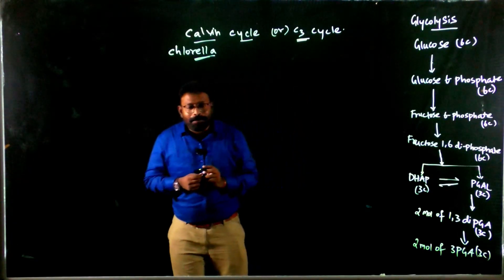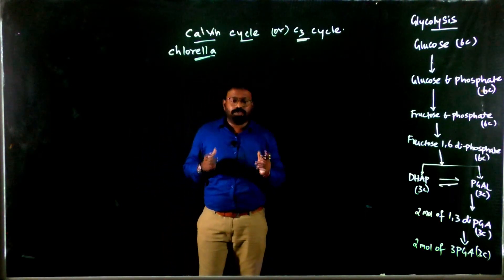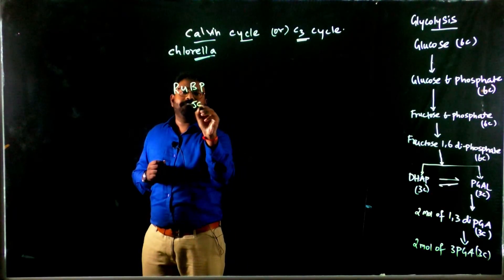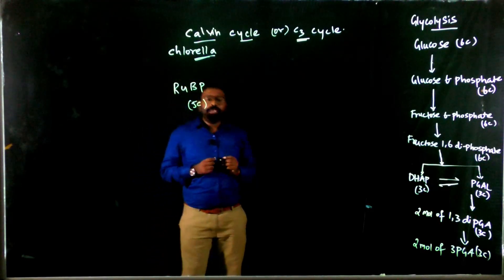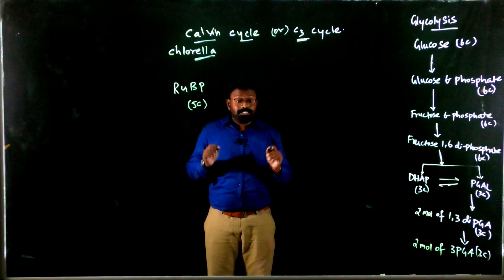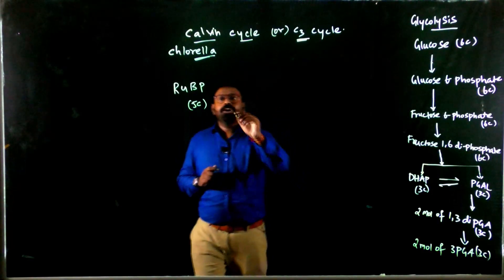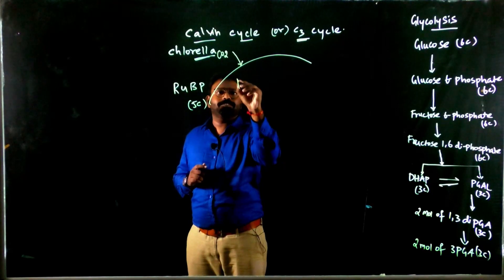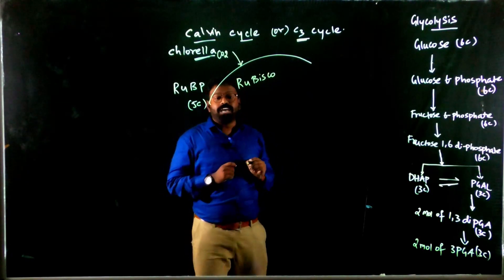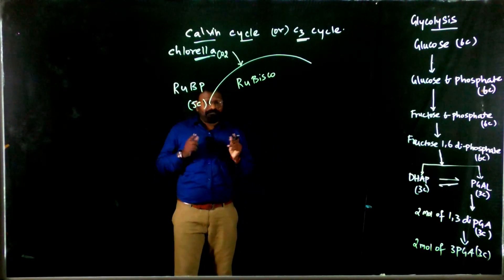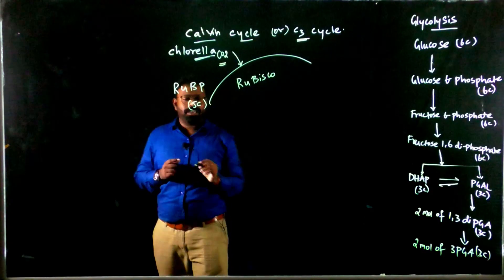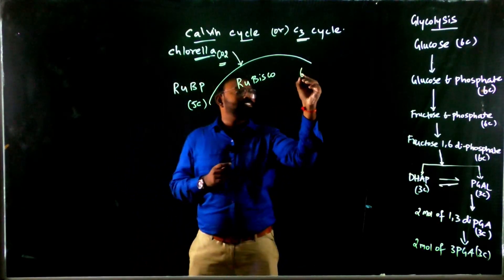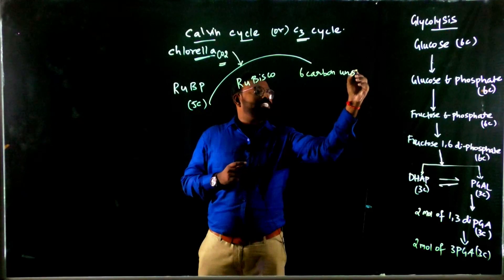The pathway starts with the RuBP molecule — a 5-carbon compound. RuBP, ribulose 1,5-bisphosphate, is the universal CO2 acceptor. Once CO2 gets fixed here in the presence of the enzyme Rubisco — the most abundant enzyme that effectively fixes CO2 — this 5-carbon compound combines with CO2 in the presence of Rubisco to yield a 6-carbon unstable compound.